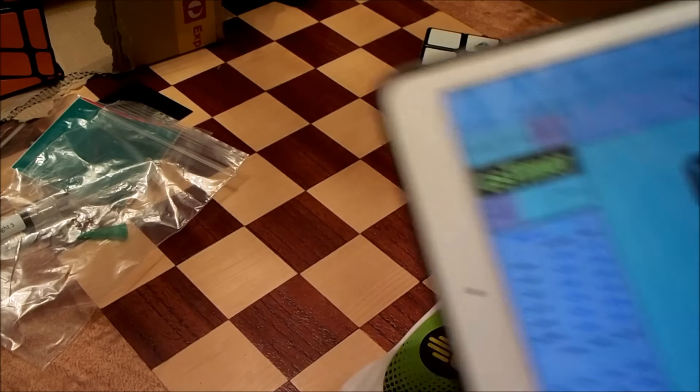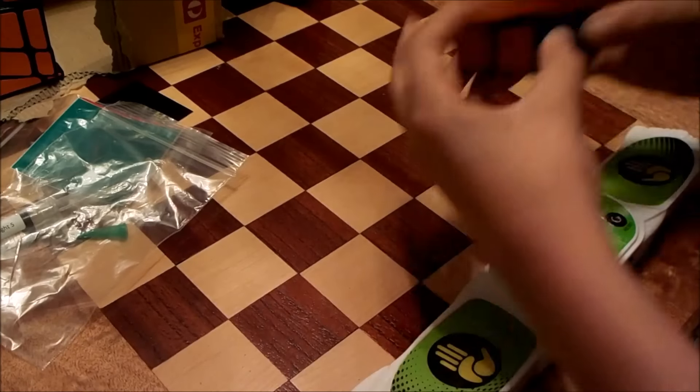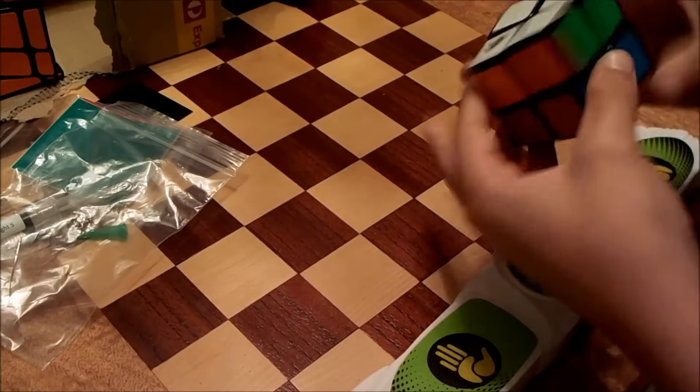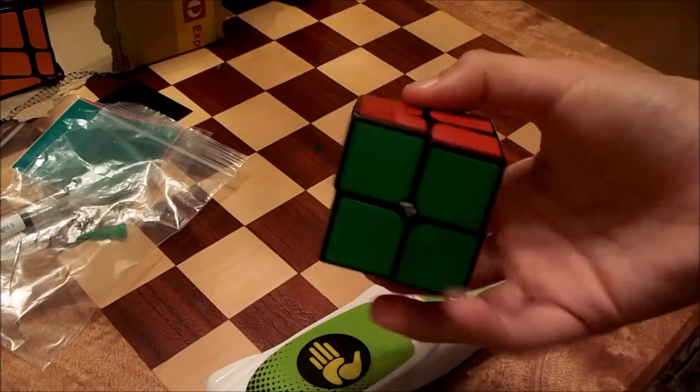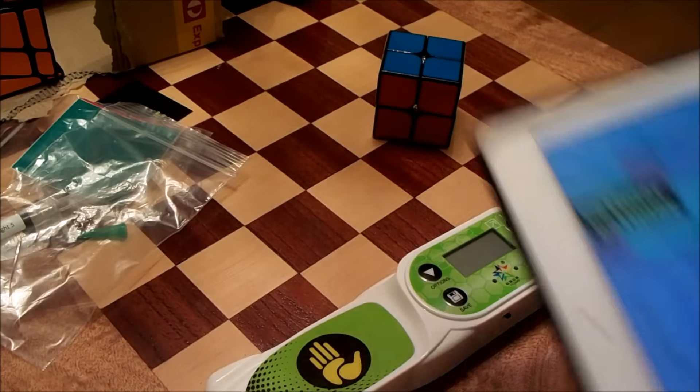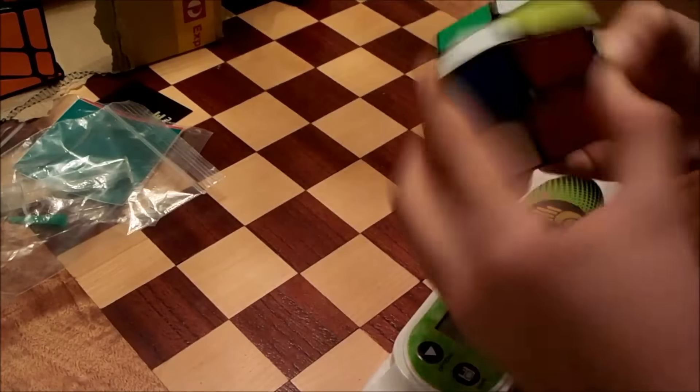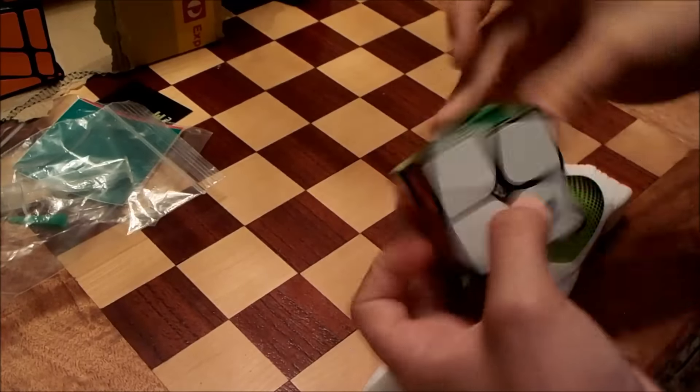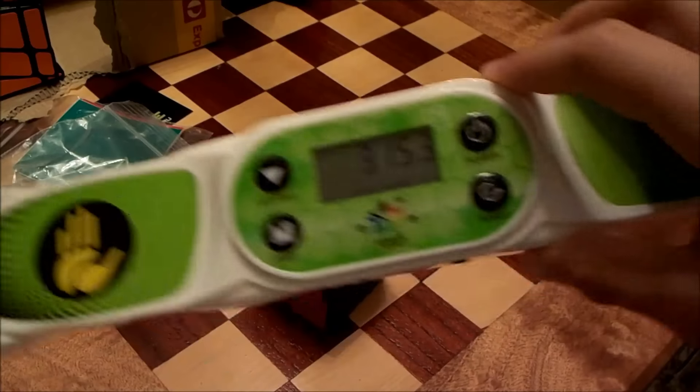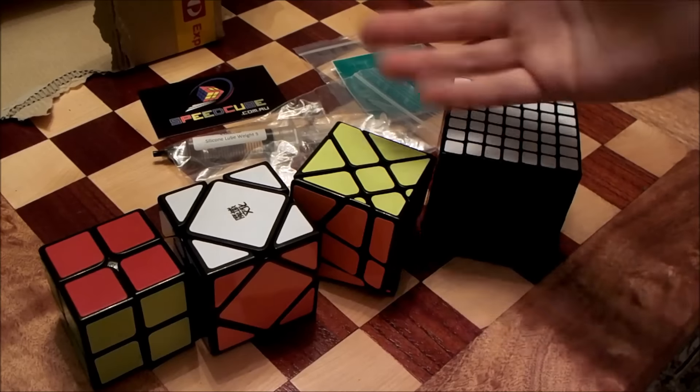Just as a quick bonus, I'm going to do my first 2x2 solve, Tangpo. 2.67. I'm so dumb, I accidentally used the Lingpo for that first solve. So we're going to do that with the next scramble. My actual first solve on the Tangpo. Have a 3.15. I hope you guys enjoyed this unboxing. And I'll see you on my next video.